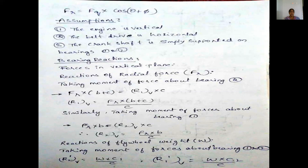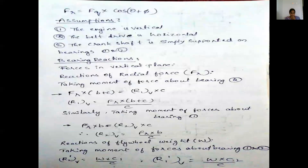R1V is equal to Fr into (B plus C) by C. Similarly, taking moment of forces about bearing 1: Fr into B equal to R2V into C, so R2V equal to Fr into B by C. These are the vertical plane reactions. Reactions of flywheel weight W: taking moment of forces about bearing 1 and 2, R2 dash is equal to W into C1 by C, and R1 dash V is equal to W into C2 by C.